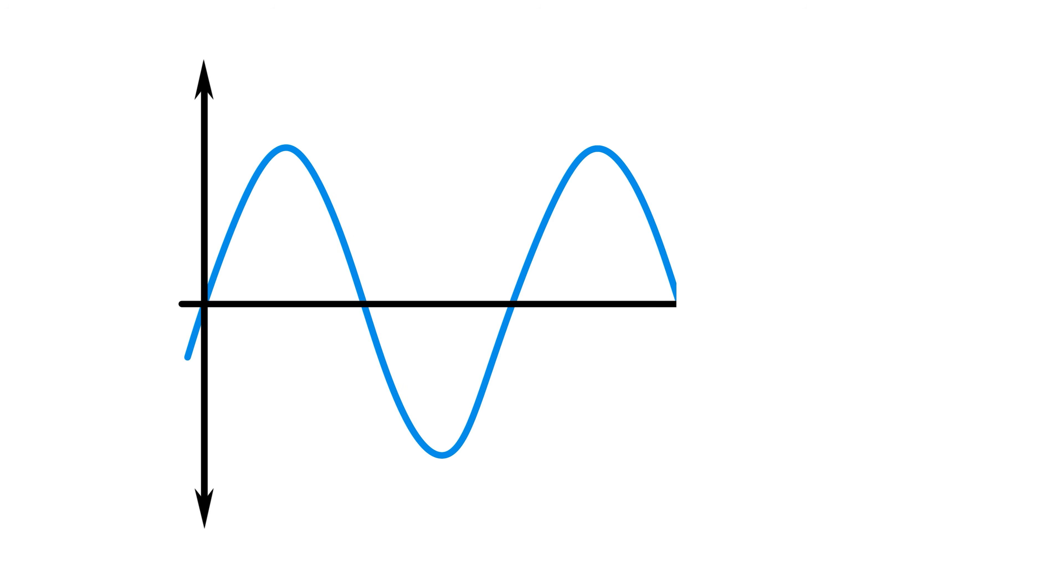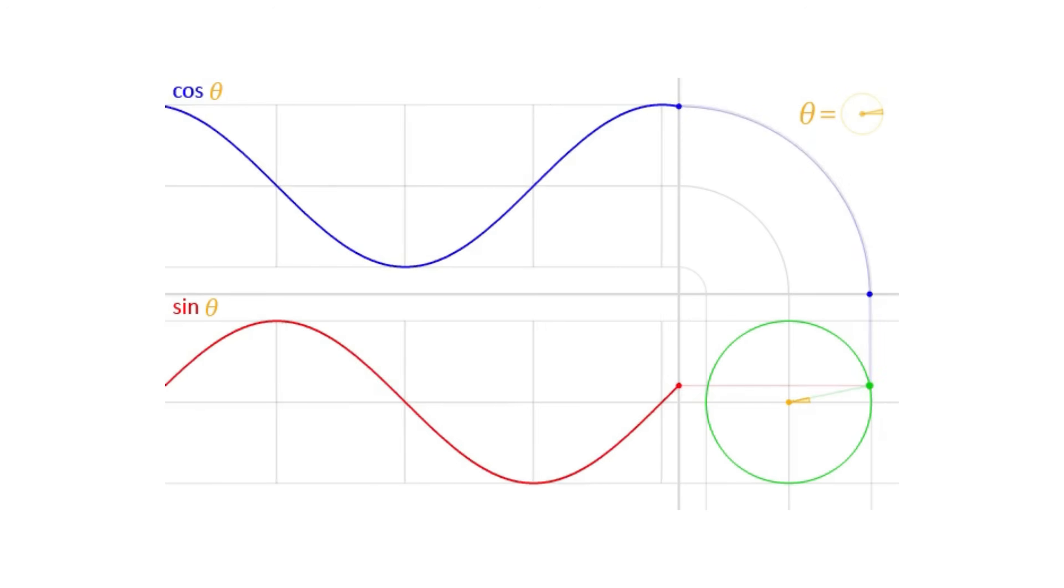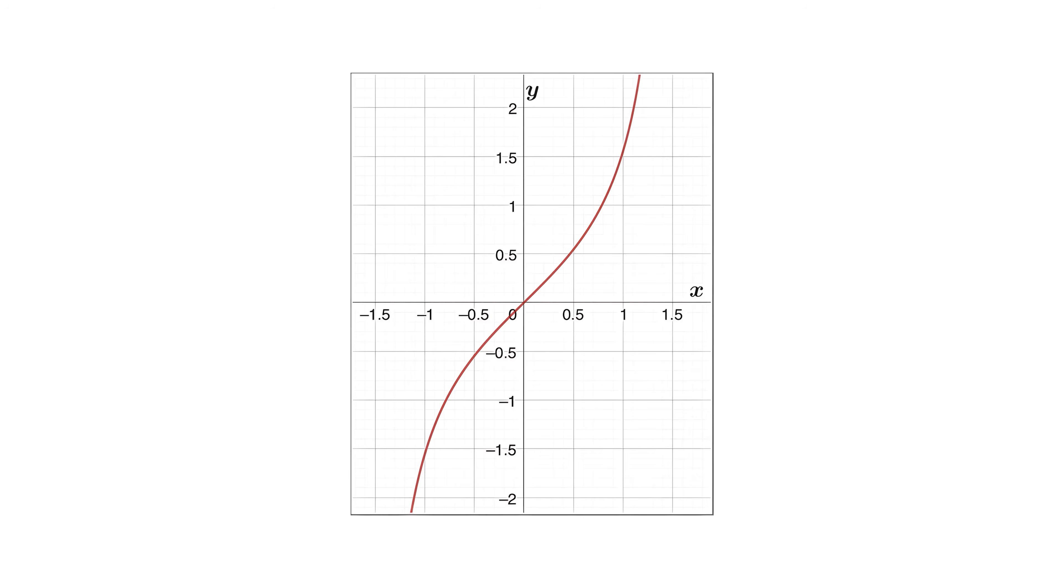They are periodic functions, meaning their values repeat at regular intervals. Sine and cosine oscillate between negative 1 and 1. Tangent has vertical asymptotes.